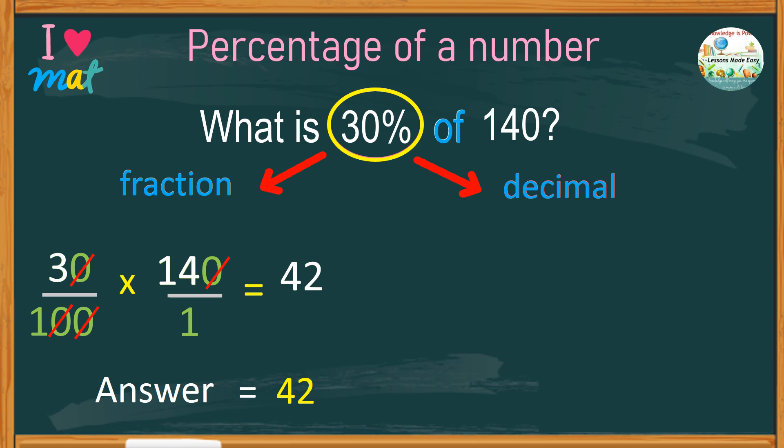Another way to find the percentage of a number is by changing percent into decimal. This other method is much easier, especially when you're using a calculator. Just change 30% into a decimal, which is 0.3, and multiply by 140, and the product is 42.